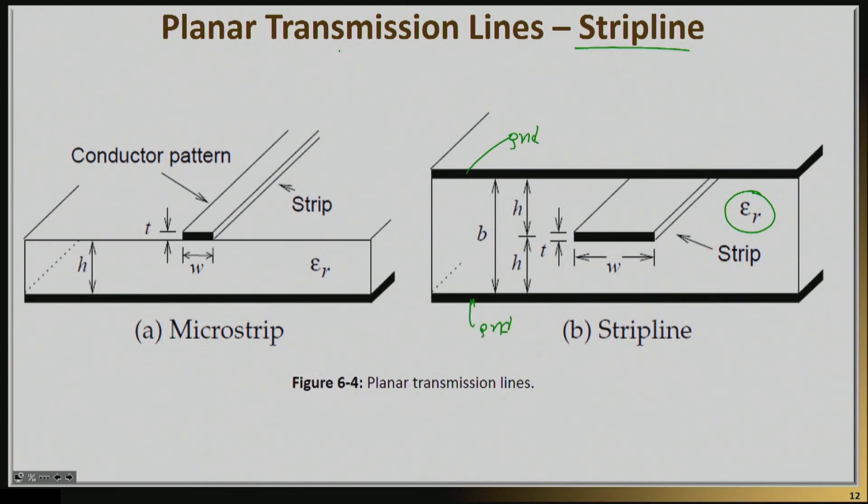And as you can probably already imagine, we have now solved a number of microstrip drawbacks. One of them, if you remember, is that we had non-uniform dielectric. Now we do have a perfectly uniform dielectric, which basically means that this line can actually support a pure TEM mode. It's not a quasi-TEM mode, it's a pure TEM mode, which means that this behavior is far better as a function of frequency compared to the microstrip line.